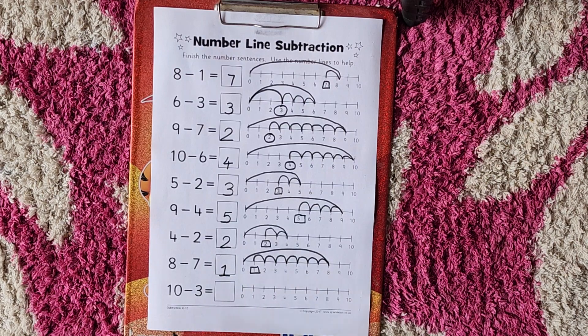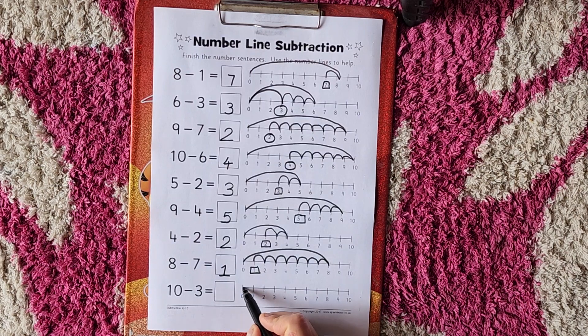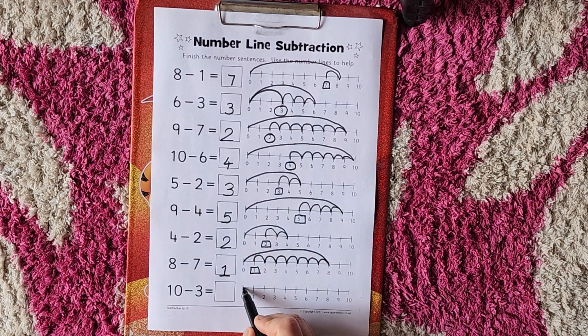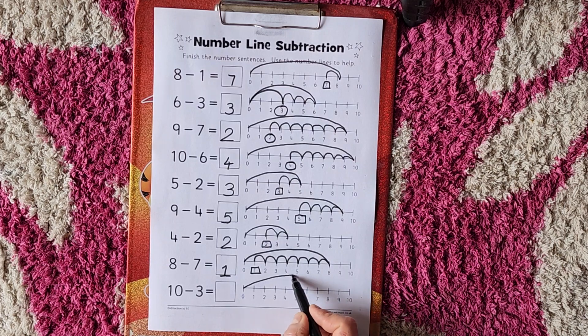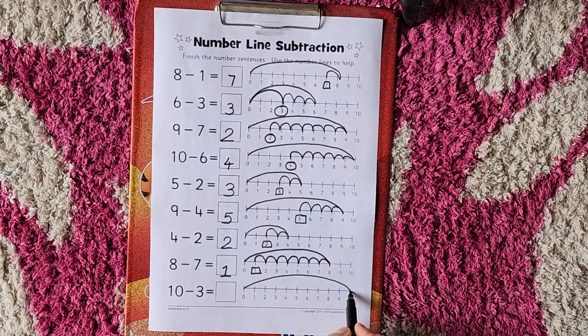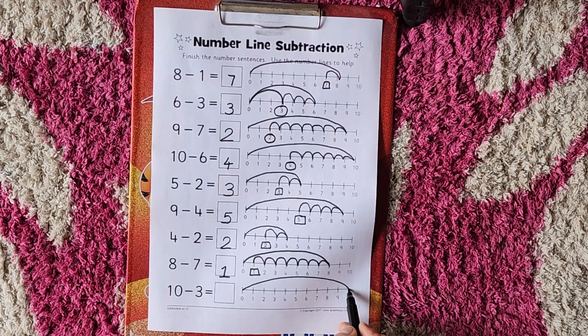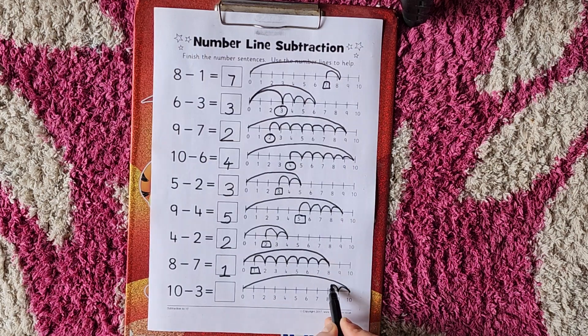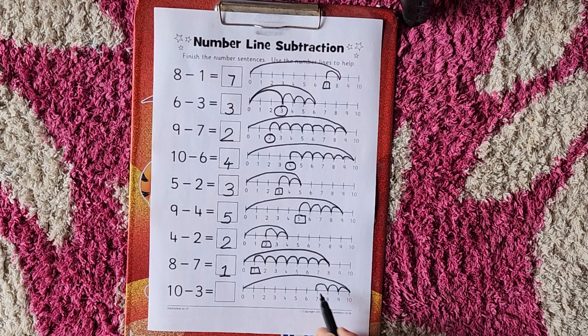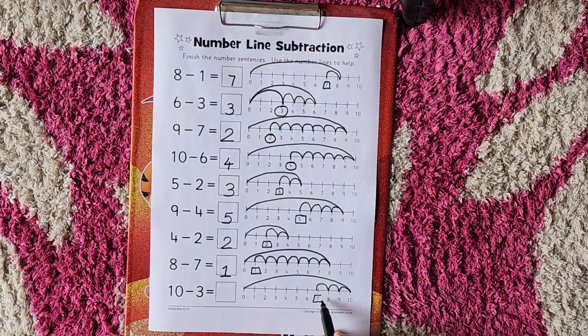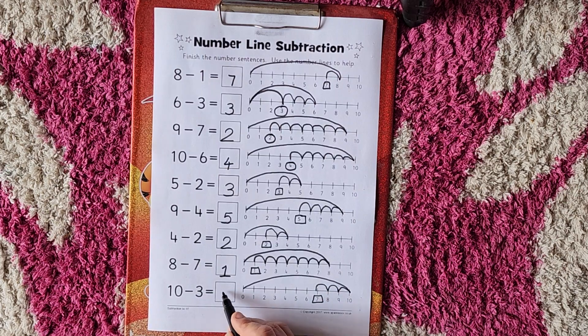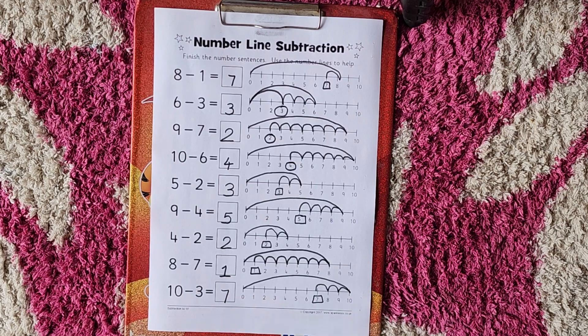Now last but not the least is 10 minus 3. Put the pencil on 0. On which number we will go? Yes, very good. 10. Now 3 steps back, because here is 10 minus 3. 1, 2, 3. On which number we go to? 7. Very good. So 10 minus 3 is equal to 7. This is how you have to do the subtraction on number line.